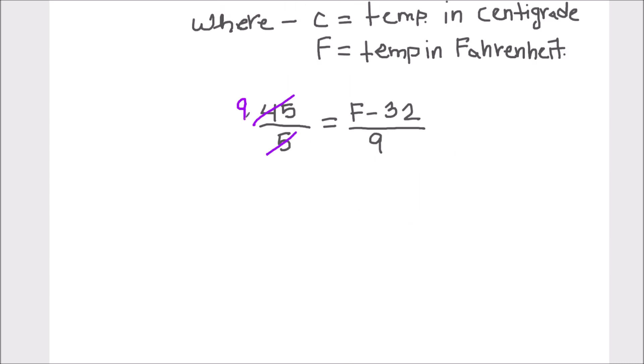Simplified as 5 times 9 is 45, so we have 9 equals F minus 32 divided by 9.